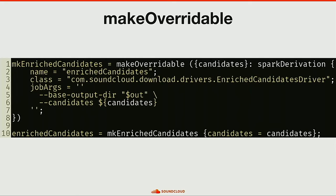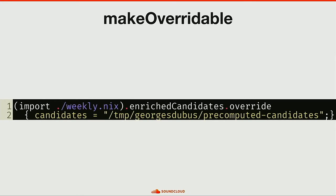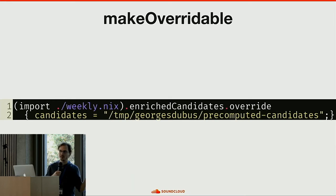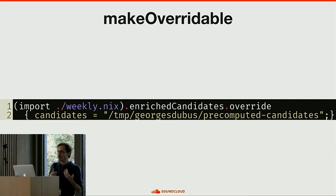I can also override dependencies. I can make enrich candidate overridable by making the candidate input an argument, which lets me override what candidate is in the definition of enrich candidates — I could provide another derivation, or a pre-computed HDFS path. This returns a new derivation exactly like enrich candidate except the candidate input is replaced. So now I can take any single batch job and override one or multiple parameters — but that's not yet what I want: I want to tweak the entire pipeline.